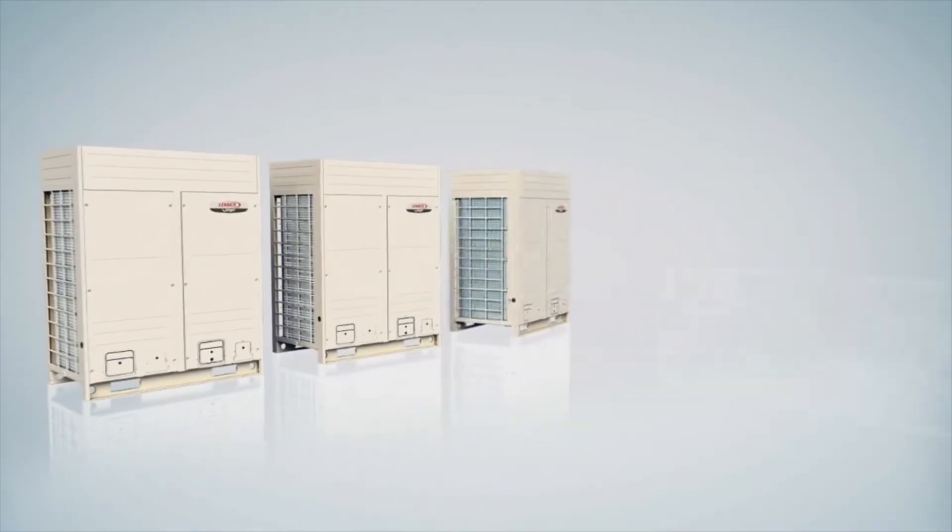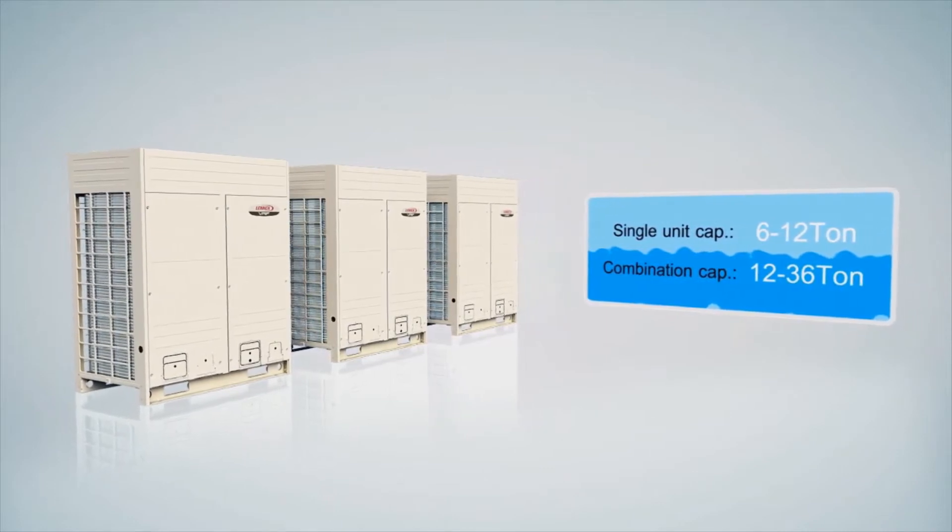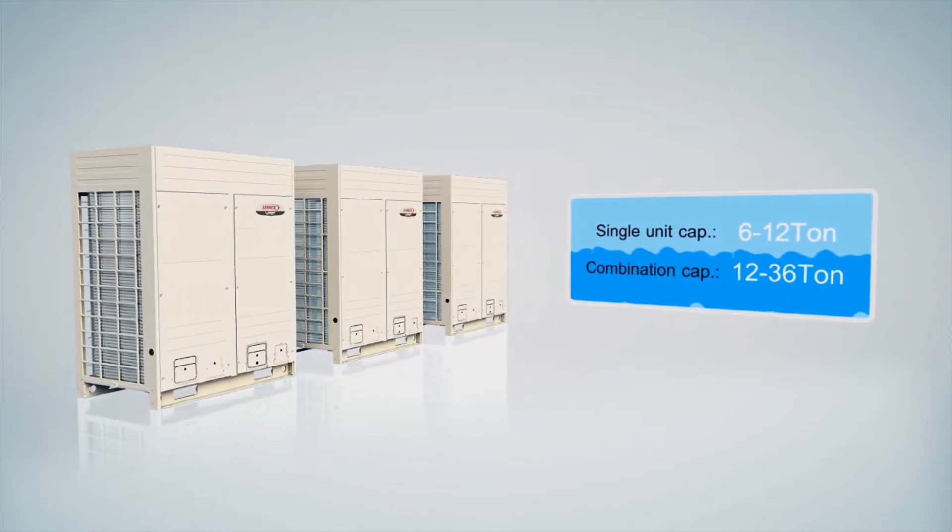The Lennox VRF system consists of four standard modules available in 6, 8, 10 and 12 ton capacities. Individual models can be combined in the field to create systems with up to 36 tons of capacity.